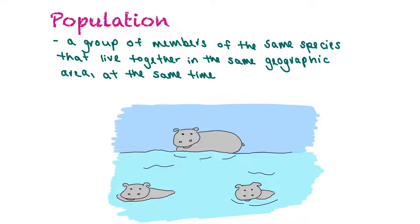A population is a group of members of the same species that live together in the same geographic area at the same time. So in this example we have a population of hippopotamuses.